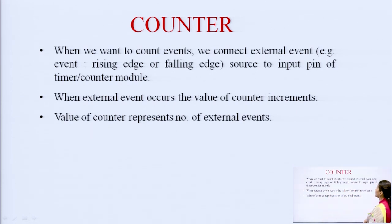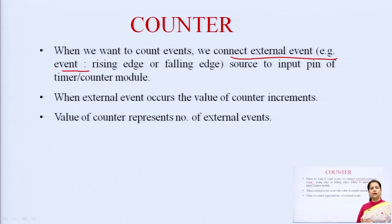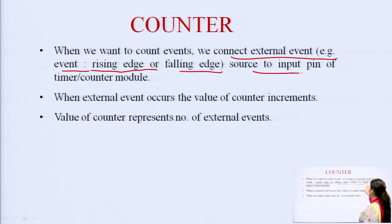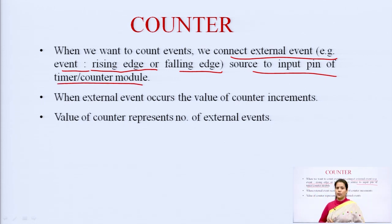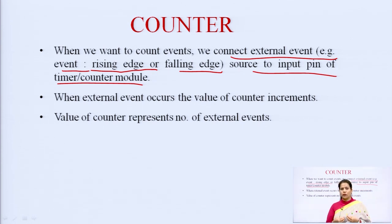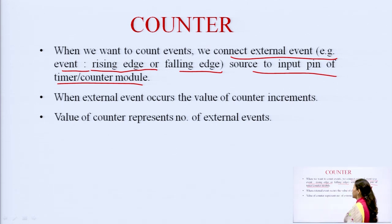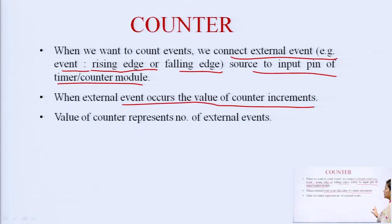When we want to count events, we connect an external event — for example, a rising pulse or falling pulse — to the input pin of the timer or counter module. Until the external event is connected to the counter input, we cannot read the value. When an external event occurs, the value of the counter increments. The value of the counter represents the number of external events.